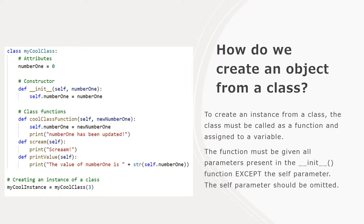All functions that refer to any attribute must include self in the parameter list, because to refer to the attributes you must do self dot and then the attribute name. Once that MyCoolClass constructor finishes executing, the class will return an instance of the MyCoolClass and save it in the my_cool_instance variable. At that point, my_cool_instance contains an object of MyCoolClass, which is going to have its number1 attribute set to 3, and then my_cool_instance can use all the class functions already written for this class.